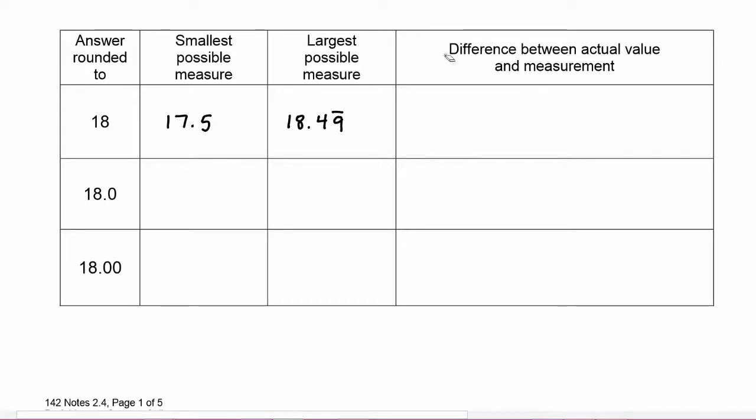One of the tools we use is we look at the difference between the actual value and the measurement. Now difference between two numbers is a subtraction, and that number could be positive or negative, so we're going to take the absolute value of the difference between our measurement—let's call it x because it varies. X is going to vary between 17.5 all the way up to a possible 18.4999 repeating. We take the difference between x and the value that we want, which is 18, and we say that that has to be less than or equal to 0.5.